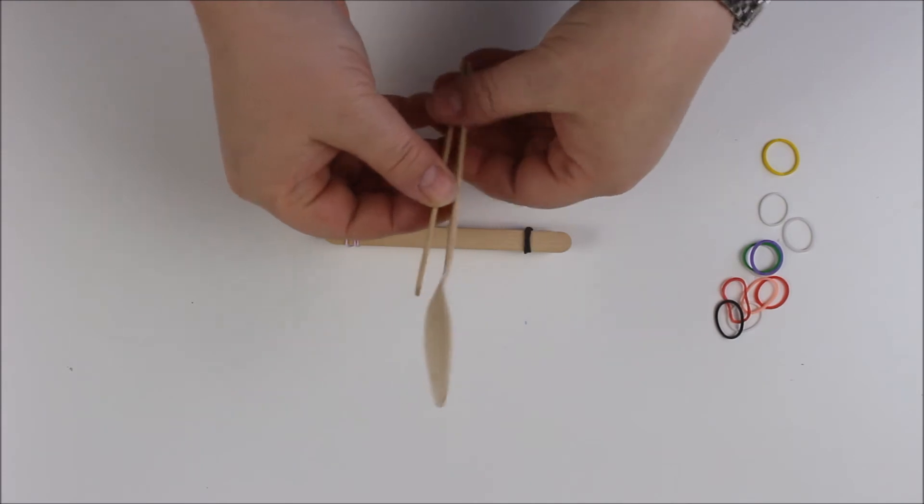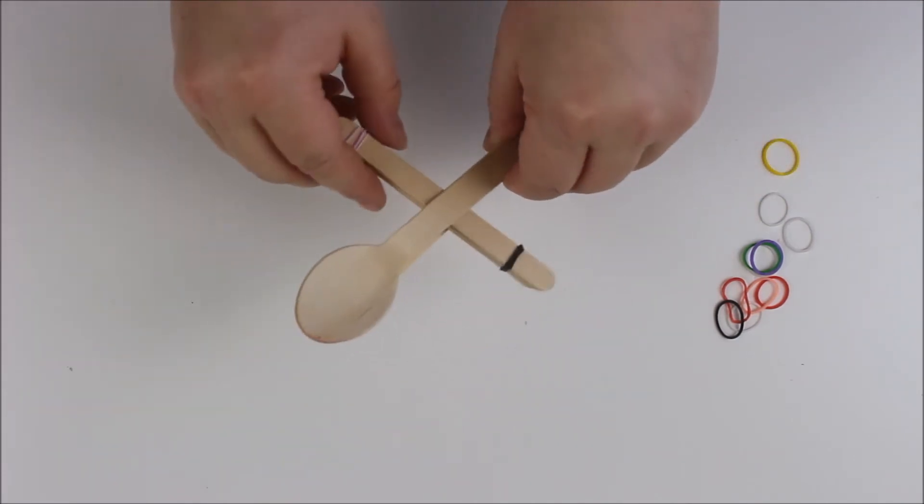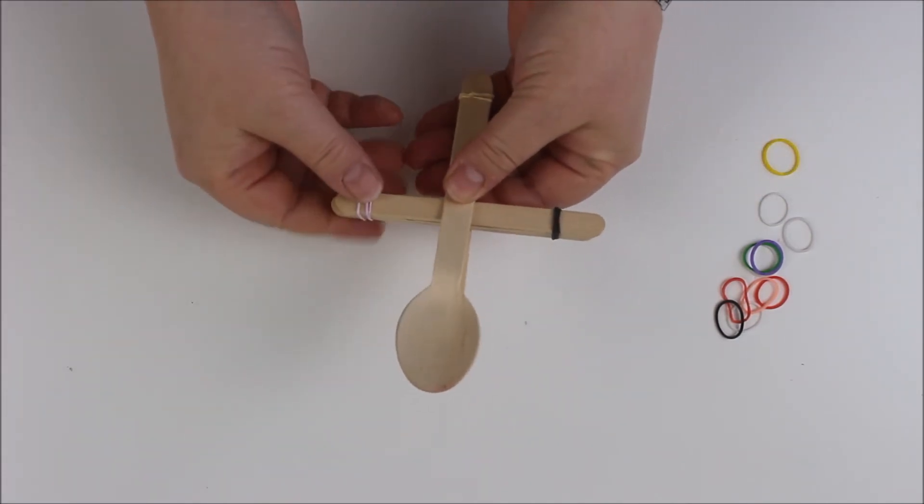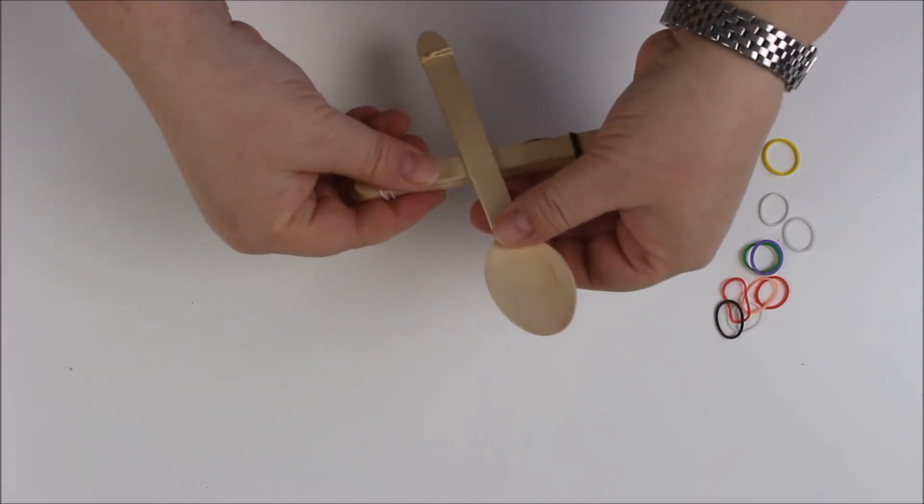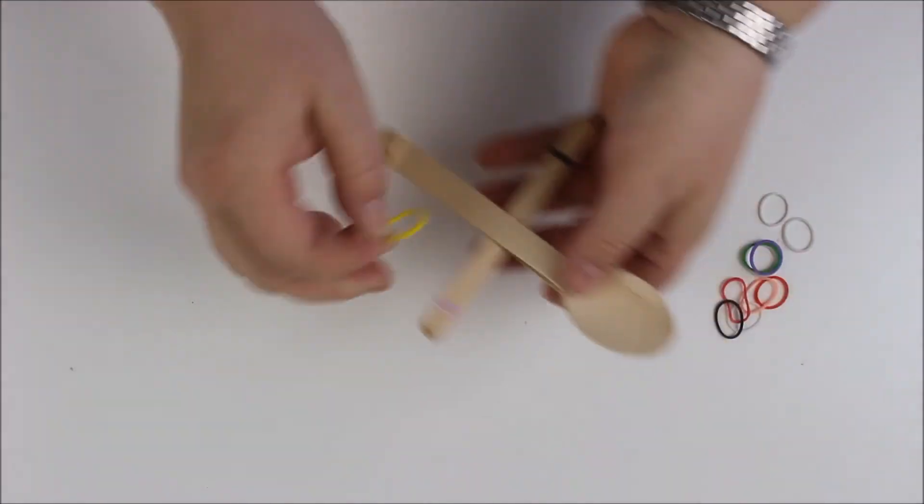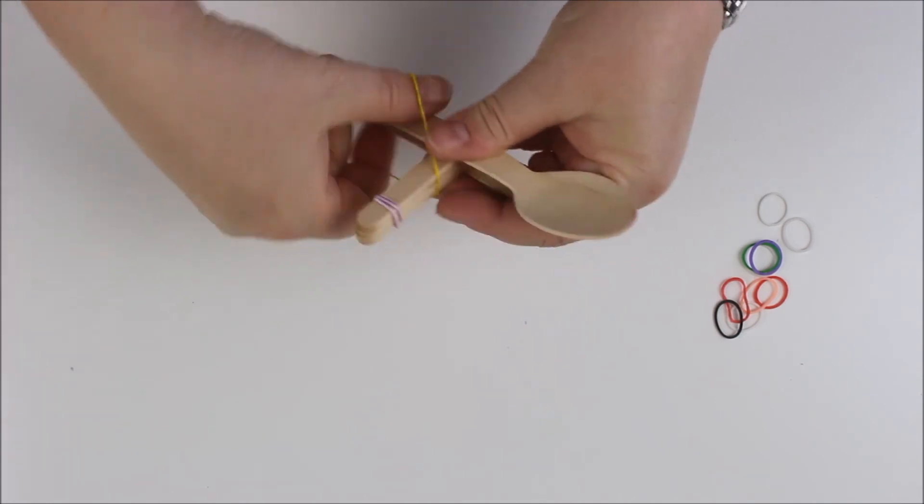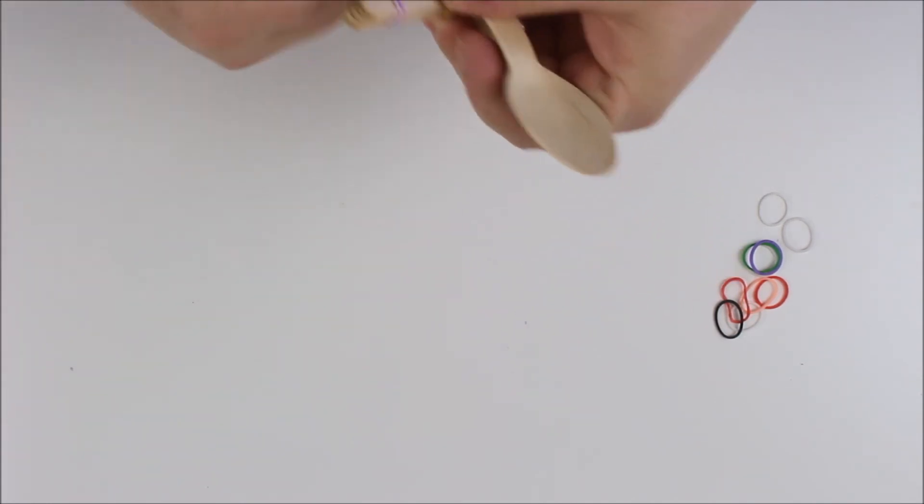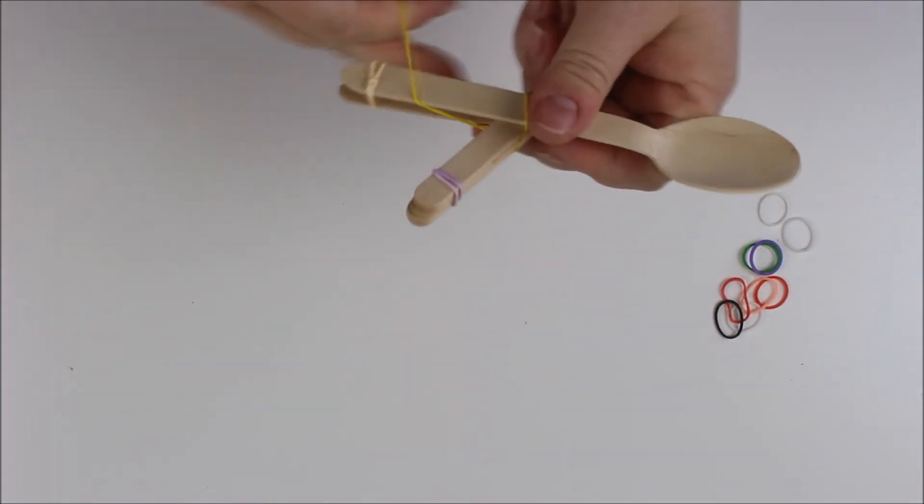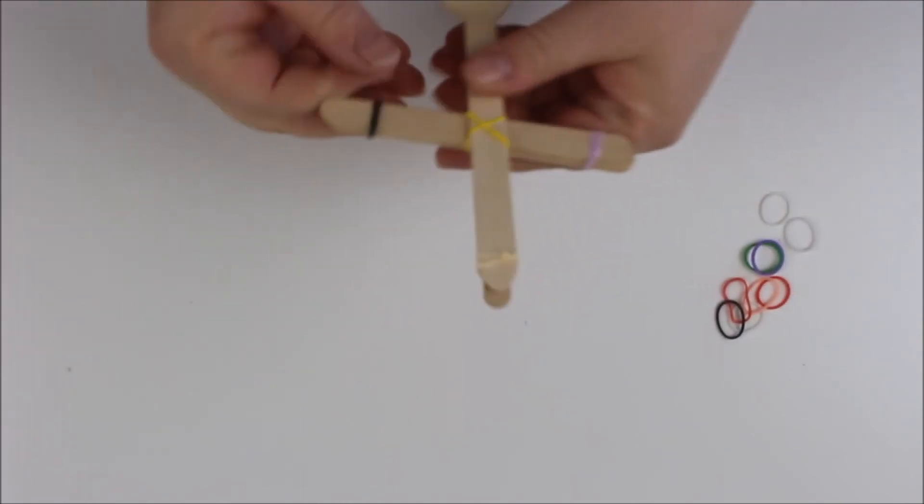Then we're going to separate it slightly and push through the other sticks and we're going to then secure with a cross loom band which is really simple. We just pop it across like that then twist it and pop it across the other way just like that.